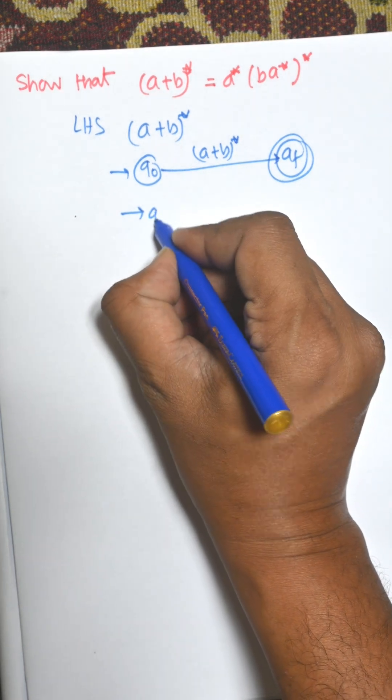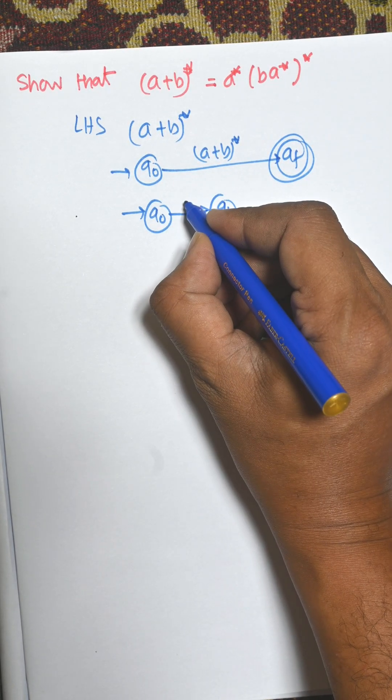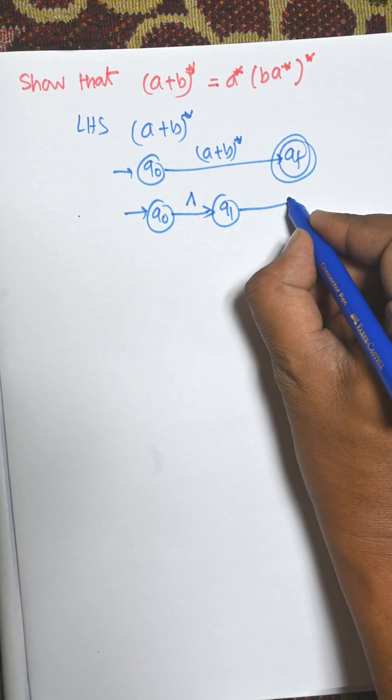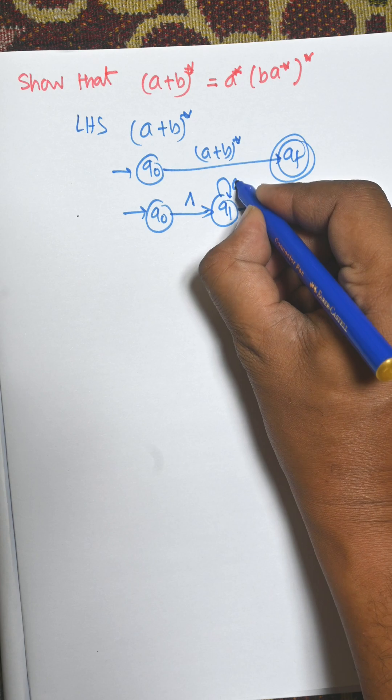Now for a+b, there is an intermediate state q1 and from q0 to q1 that is empty symbol. From q1 to qf there is another empty symbol and then it will be a+b.